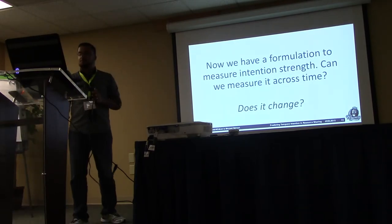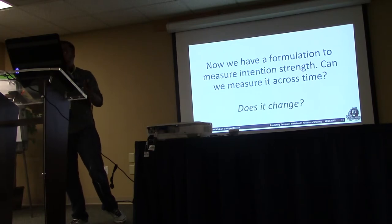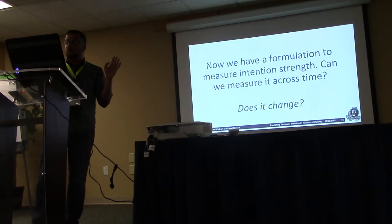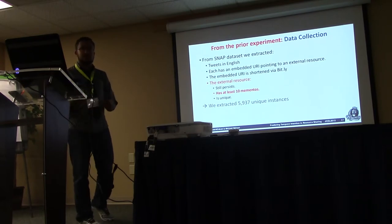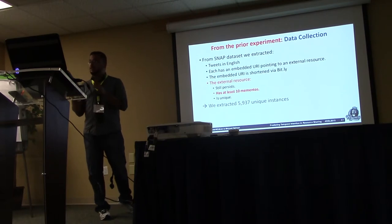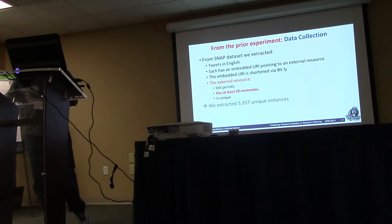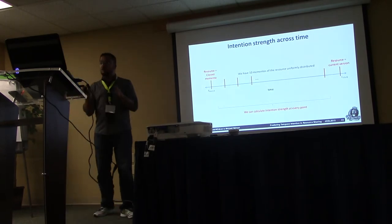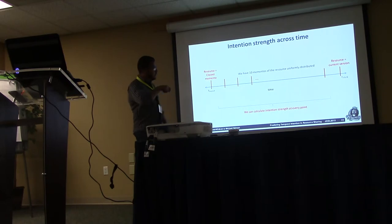But does the intention strength change over time? Did it shift since the tweet was posted three years ago, or is it stable? If it's stable, we can just take a snapshot at the time of tweeting and we're done. Apparently it's not stable. Our preliminary analysis suggested we need further understanding. In our dataset, each tweet is connected to a resource with the past version at tweet time, the current version three and a half years later, and 10 mementos in between — giving us 12 snapshots of how the resource changed over three and a half years.